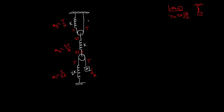Now let's talk about the displacement of the pulleys, starting from the top. This end is fixed, meaning that if the elongation in this spring is x3, this pulley will go down by x3 upon 2. The logic is: if a string increases its length by x, then the pulley goes down by x/2 so that x/2 is compensated on each side. So if x3 is the elongation, this pulley goes down by x3/2.